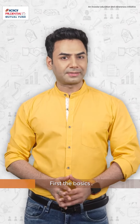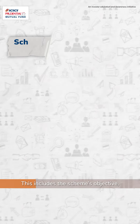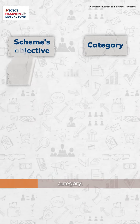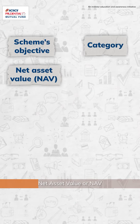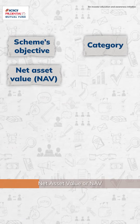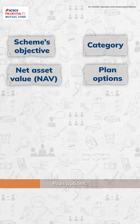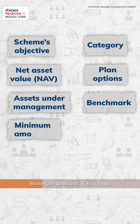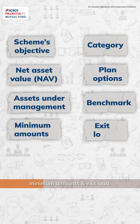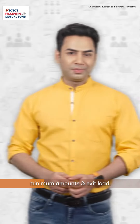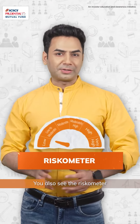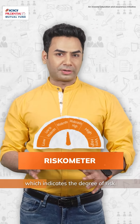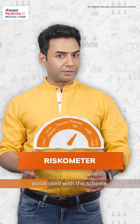First, the basics. This includes the scheme's objective, category, net asset value or NAV, plan options, assets under management, benchmark, minimum amounts, and exit load. You also see the riskometer, which indicates the degree of risk associated with the scheme.